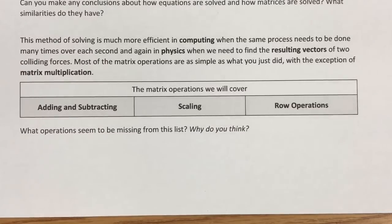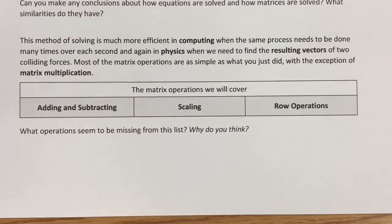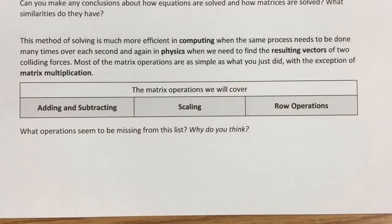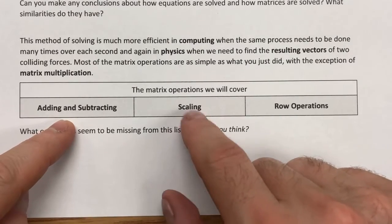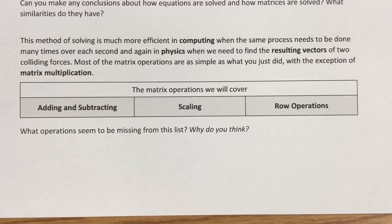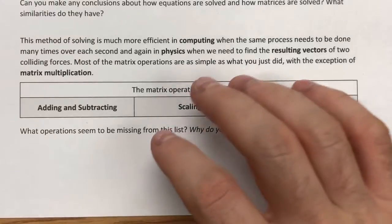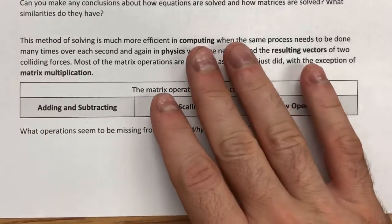And so a few sections that we're going to be covering are going to be adding and subtracting matrices, scaling, and some row operations. You might take a moment and think, what seems to be missing? We have adding and subtracting. We have scaling, which sounds a lot like multiplication, but we are missing division. And you'll notice that matrix multiplication is going to be a topic that we cover, but matrix division really isn't a thing.